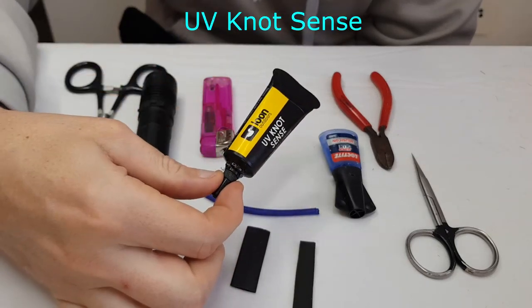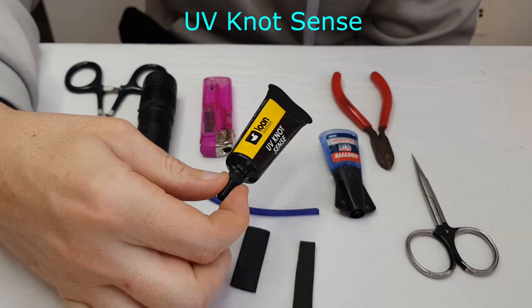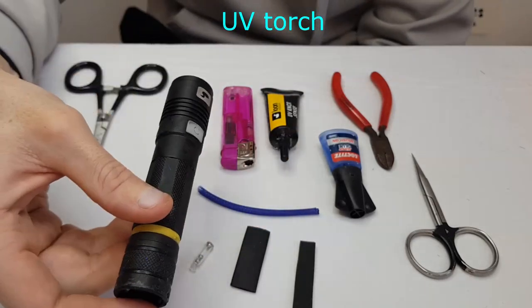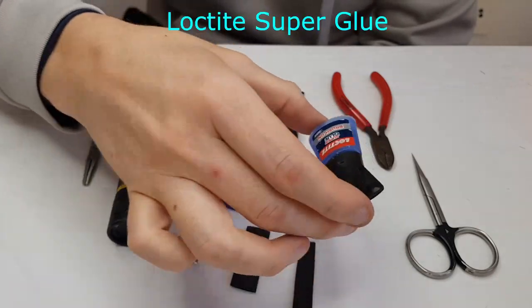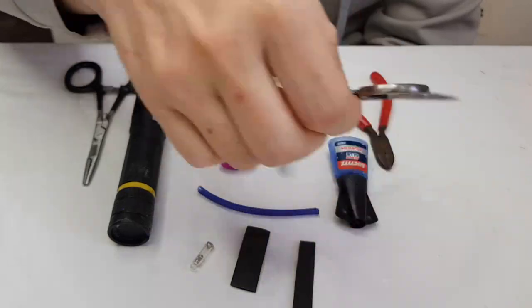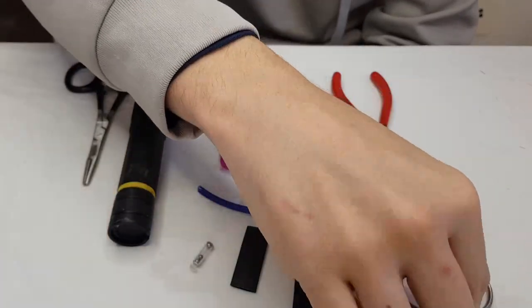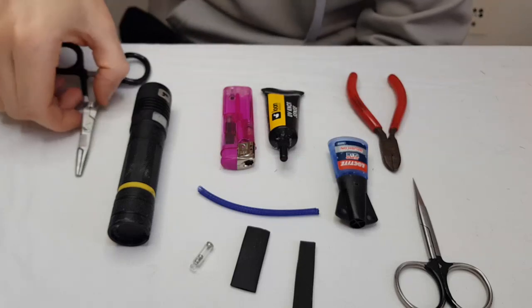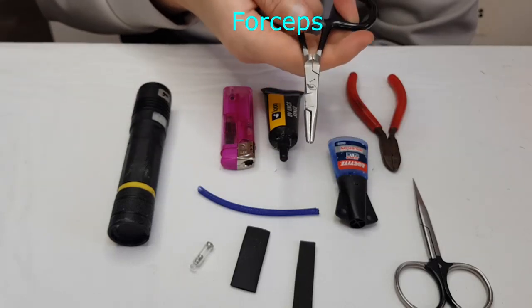UV knot sense or similar UV glue, a lighter, UV torch, Loctite super glue or similar, sharp scissors, sharp side cutters, and finally forceps.